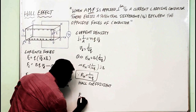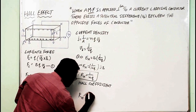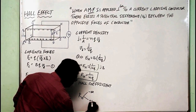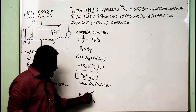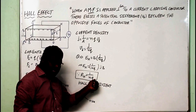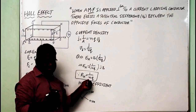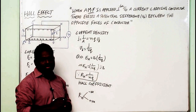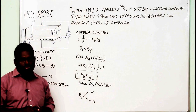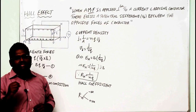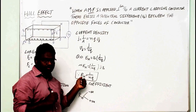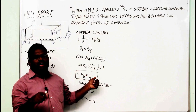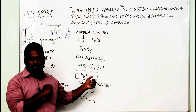If R_H is negative — why? Because R_H equals 1/NQ. N, the number of charge carriers, is a positive quantity. If the material is of n-type semiconductor, the majority charge carriers are electrons, and the electron charge is minus e. So then R_H will be negative. Therefore, if R_H is negative, the majority charge carriers are electrons, meaning the material is of n-type semiconductor.